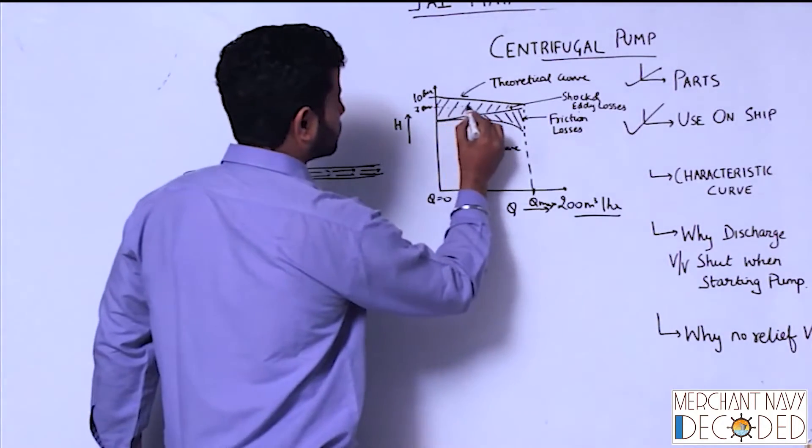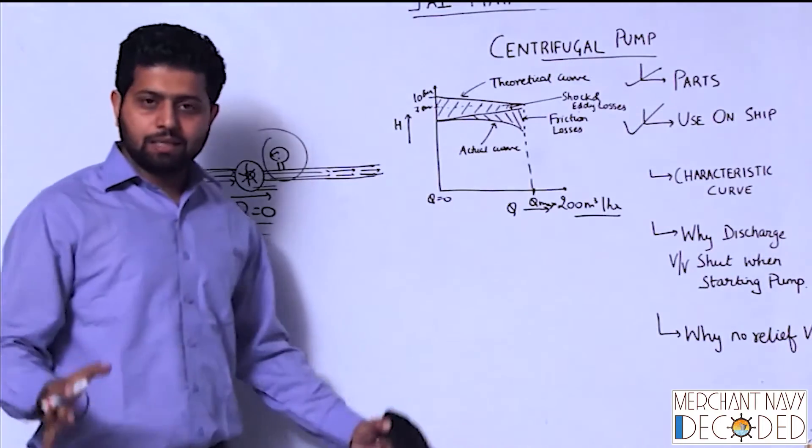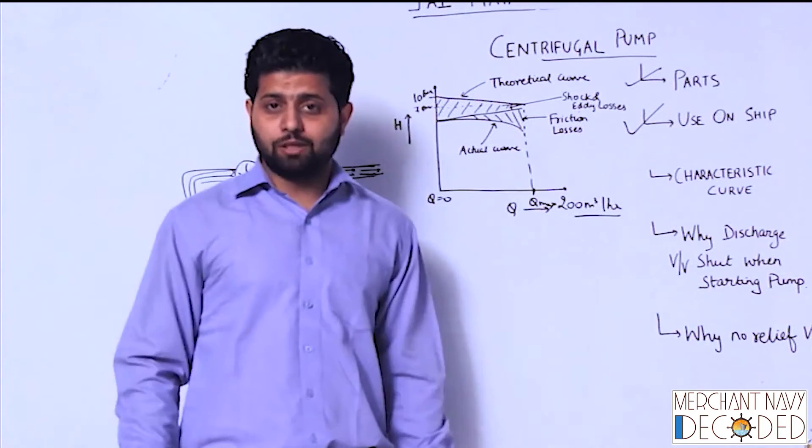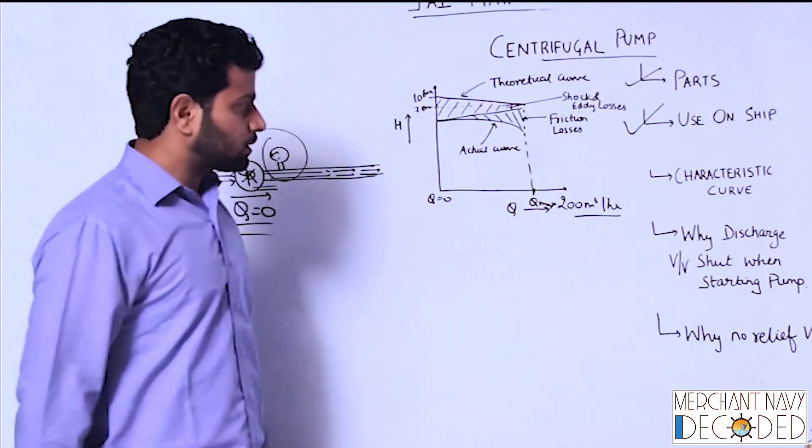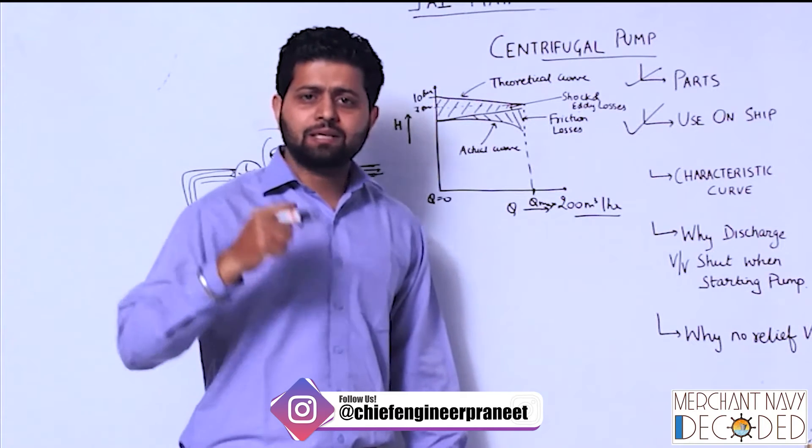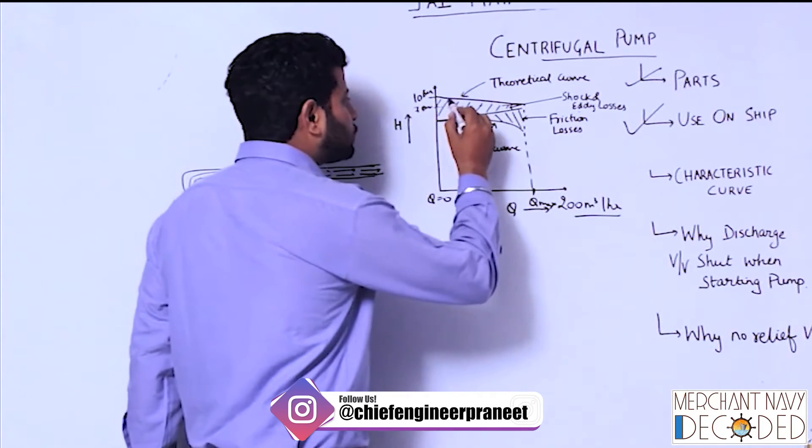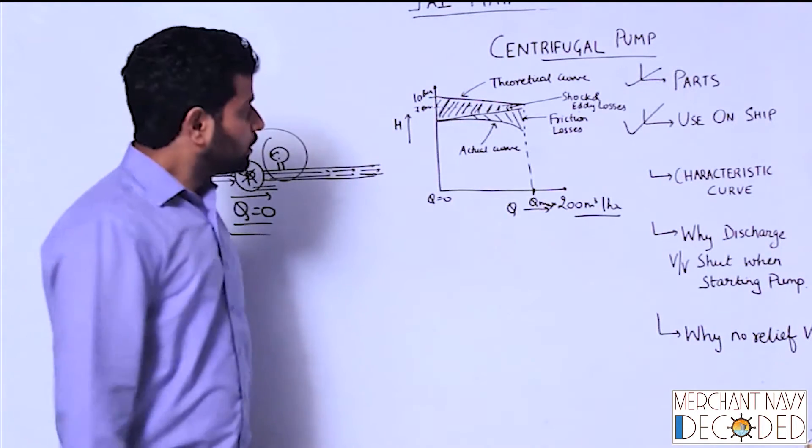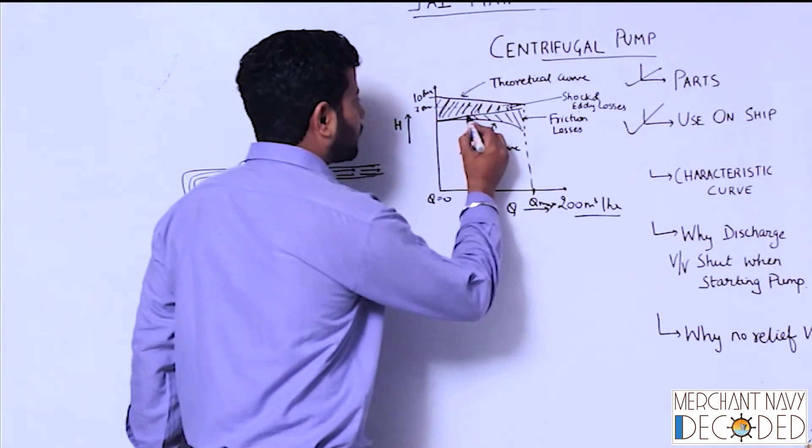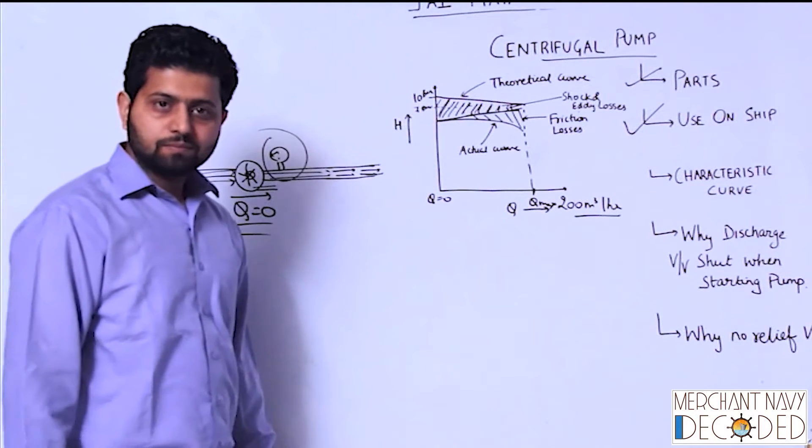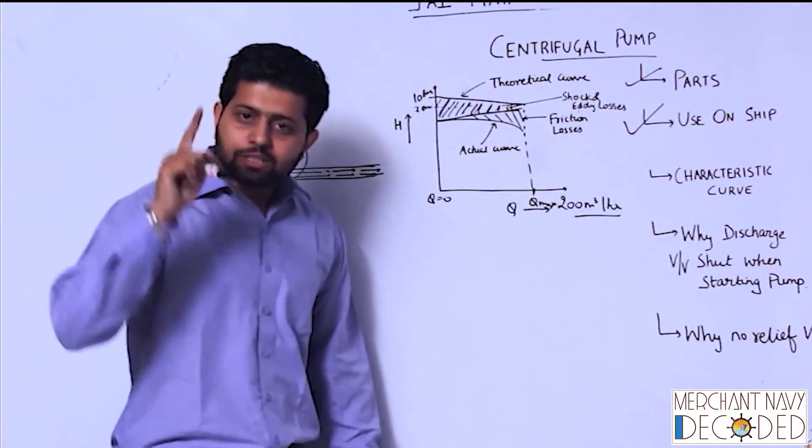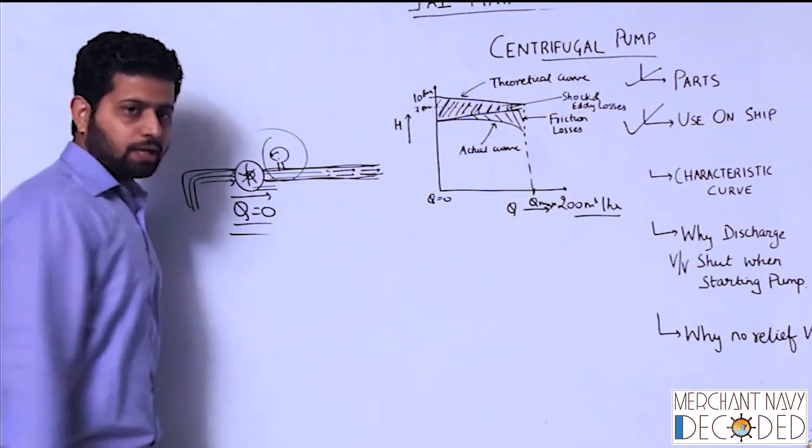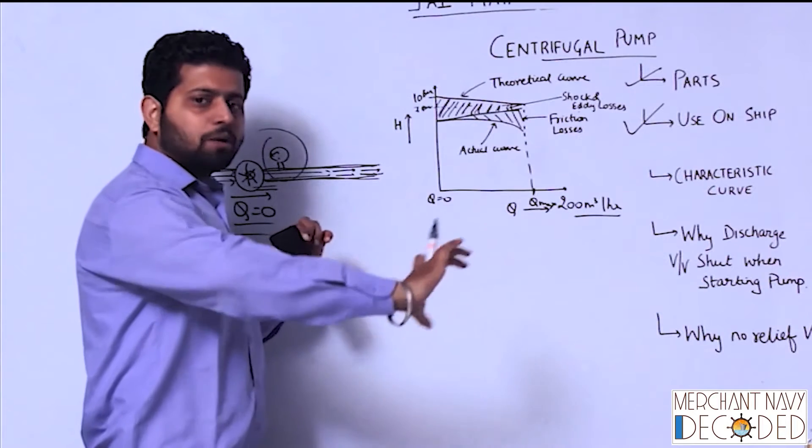I am talking about this curve now, the theoretical curve, but again this theoretical curve where I have not assumed any kind of other issues. But the first issue that comes is because of the impeller blade thickness and other mechanical conditions. There are some shock losses and eddy losses, due to which this curve now comes like this. But again it does not stop there.